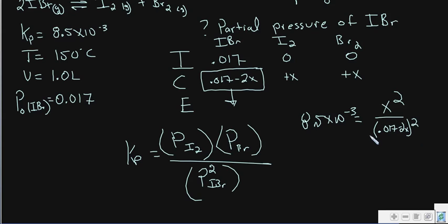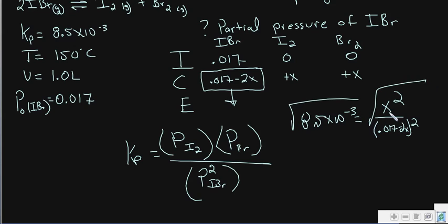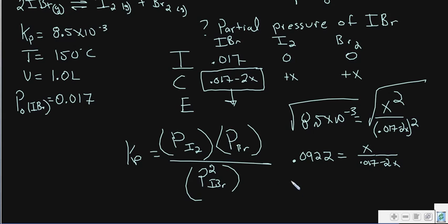Now we solve this algebraically to get our value of x. Once we have x, that tells us the partial pressure of I₂ and Br₂, and we multiply x by two and subtract from 0.017 to find the partial pressure of IBr at equilibrium. Taking the square root of both sides gives approximately 0.0922 equals x divided by (0.017 minus 2x).